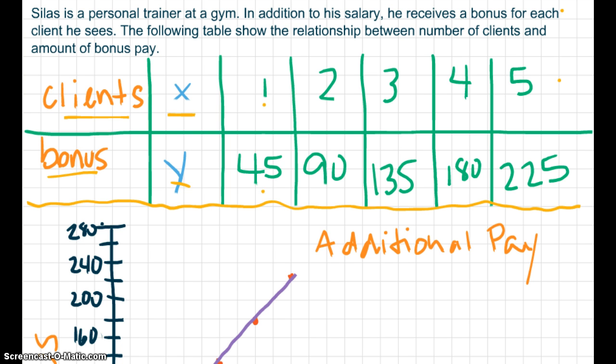When he has one client, he gets $45. When he has two clients, he gets $90 and so on and so forth. So I want you to write down this situation, the table, and then I want you to graph it on your grid paper.